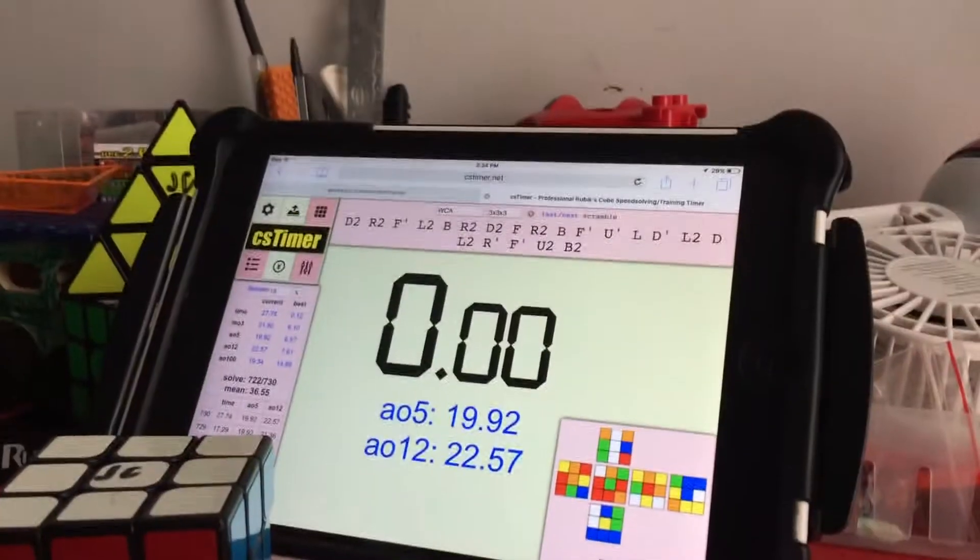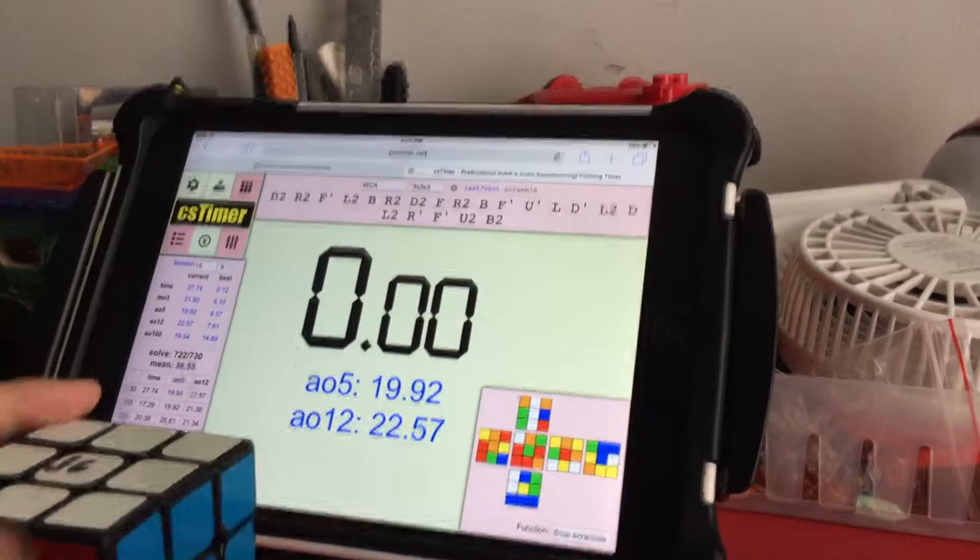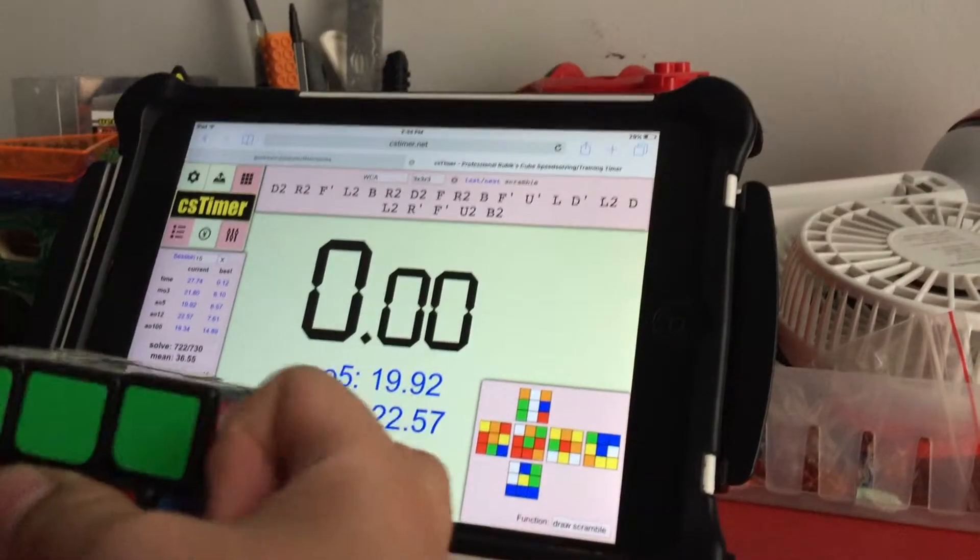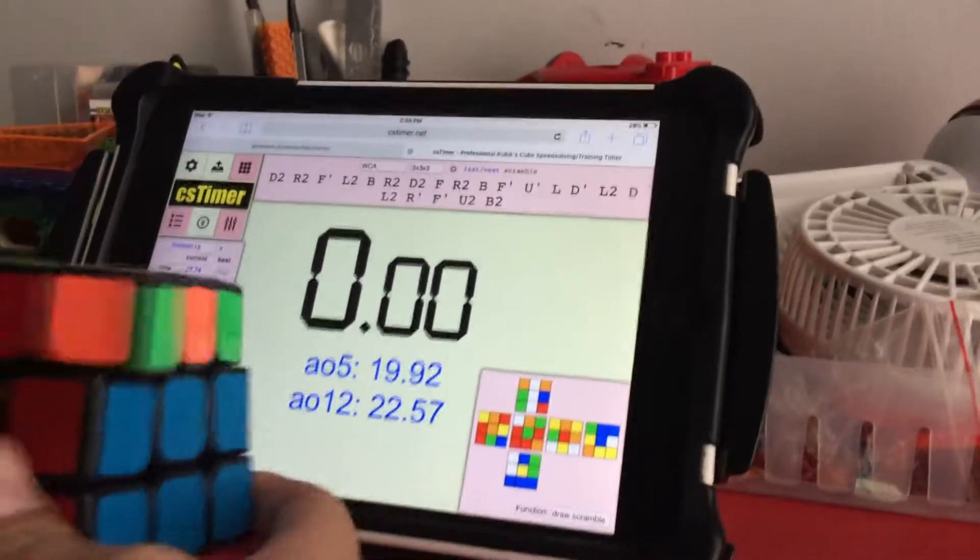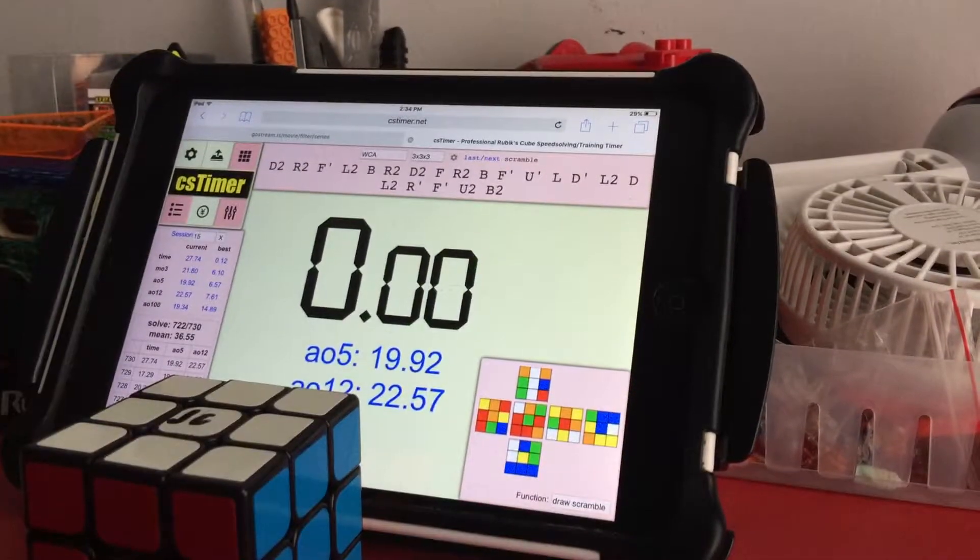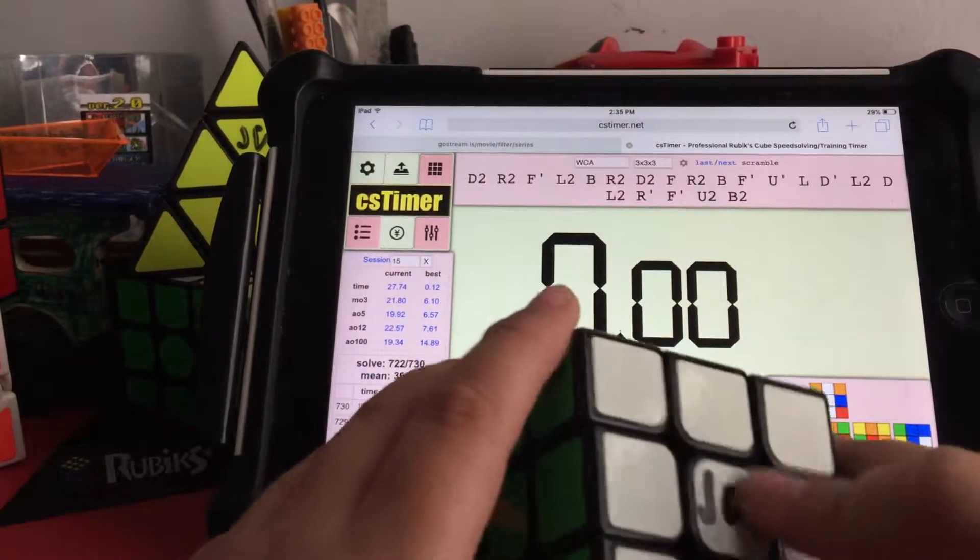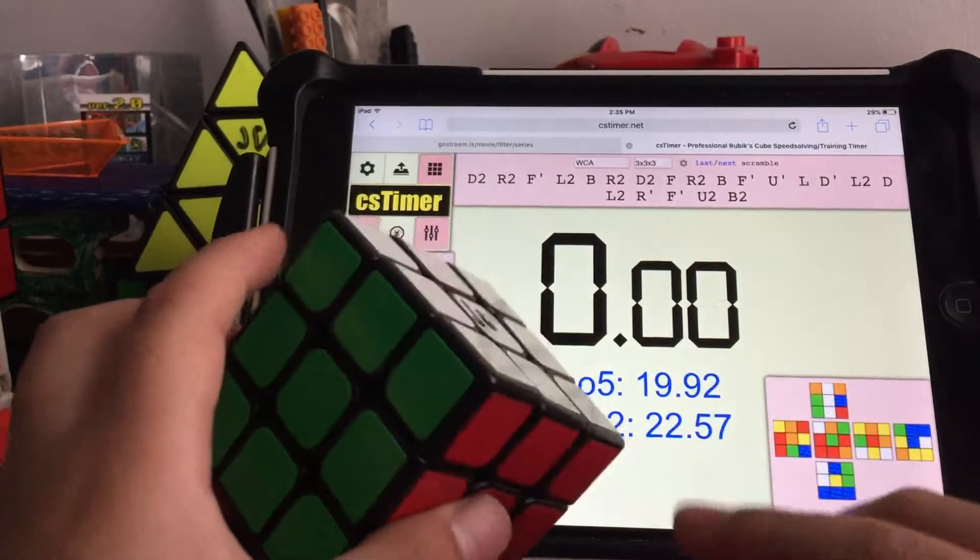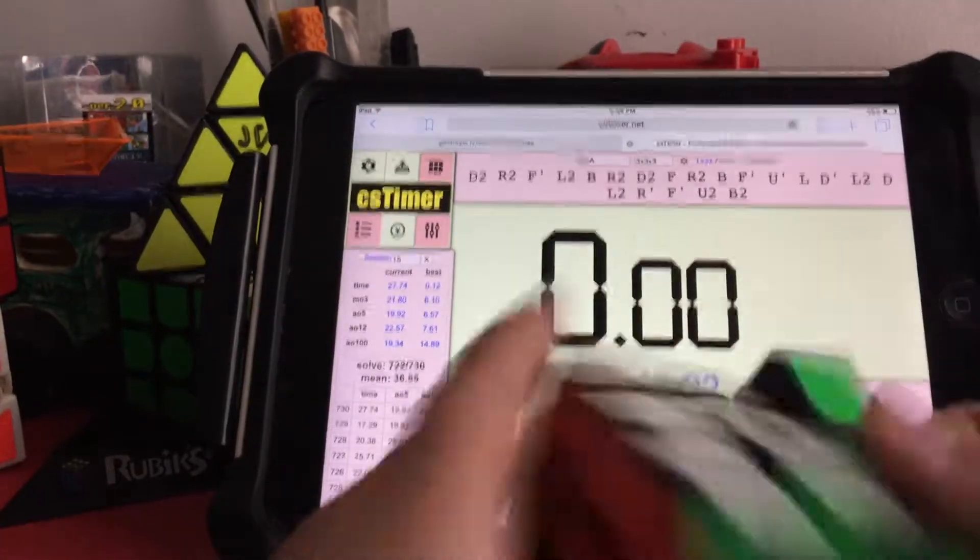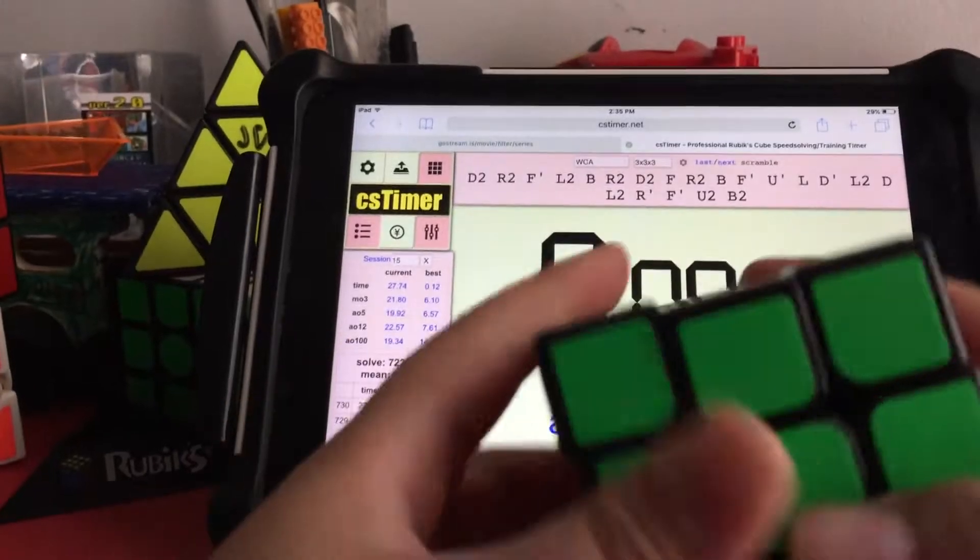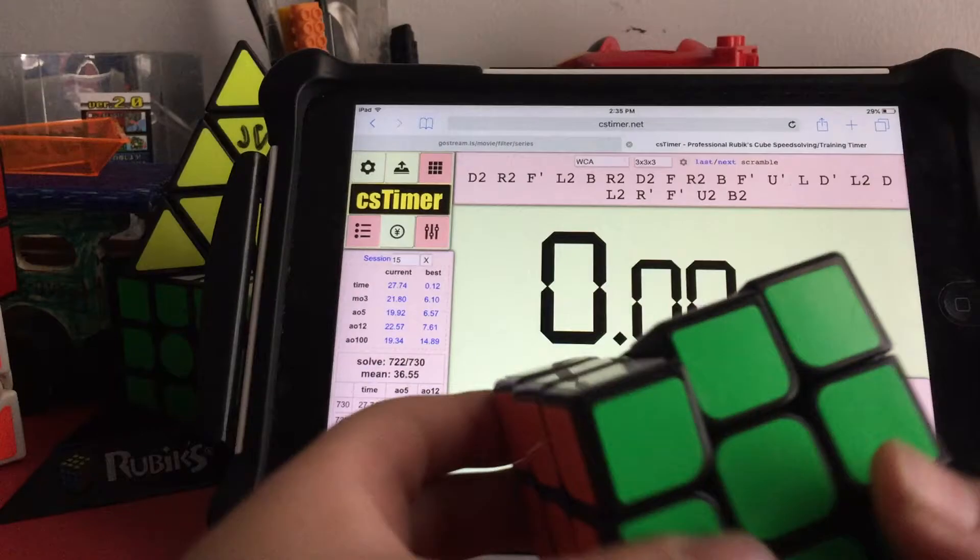Hey guys, Jack here, and today welcome to a new series called OG Averages where I will see an old cube that used to be really good in my collection and do an average of five on it, like an original game circuit that was good in its prime.